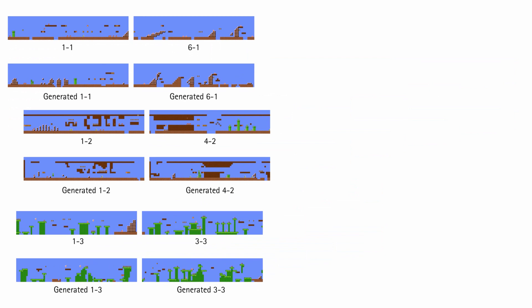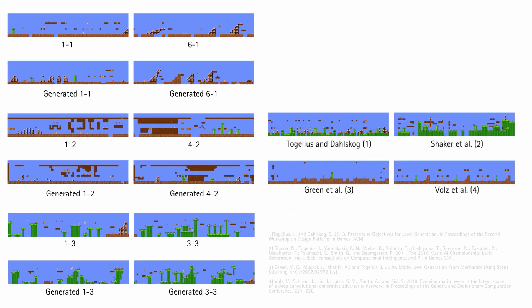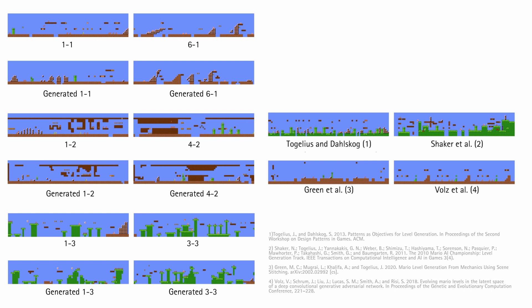Here are some examples of generated levels from different generators. While there are still some areas we humans would define as errors, like broken pipes and platforms, overall, the levels look very much like reinterpretations of the original level. Small patterns, like these three platforms over here, are learned and even varied in the generation process. By comparison, levels of other generators may not even look like Mario levels or have trouble showing different styles and variation.